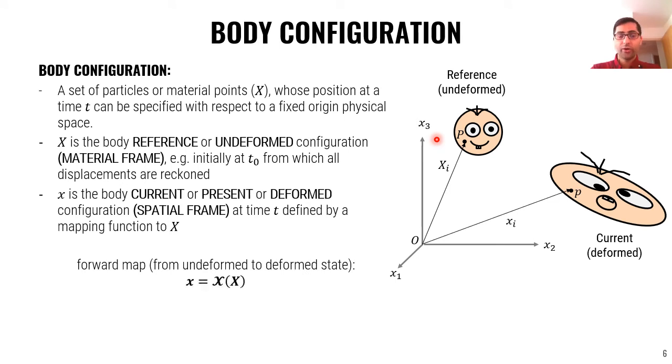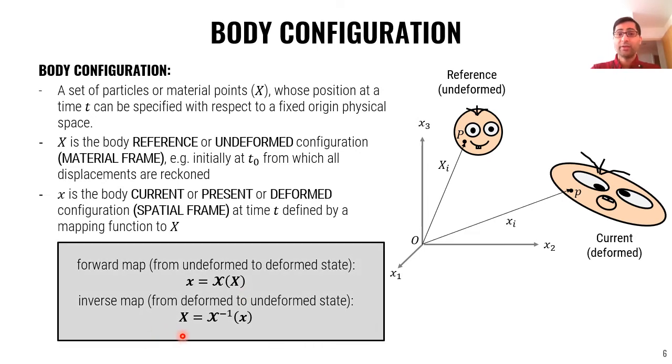Okay, now we can define the forward map which says the deformed case can be found based on a mapping as a function of the undeformed case. So, x is equal to a function of capital X and we can define an inverse map. Capital X can be defined as an inverse map of x itself. Here you see that the forward mapping gets us from the reference to the current deformation or configuration and inverse map takes us from the deformed configuration back to the reference or undeformed configuration.